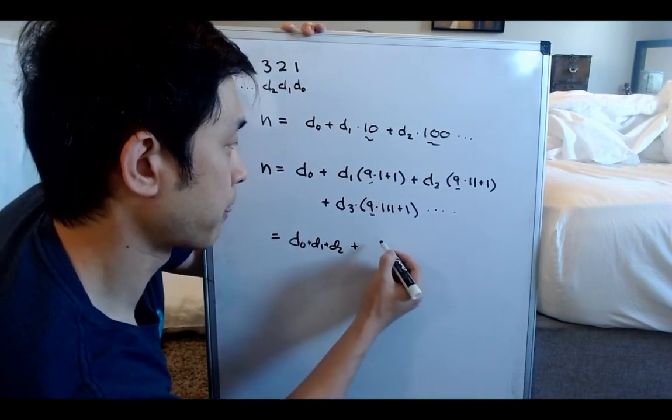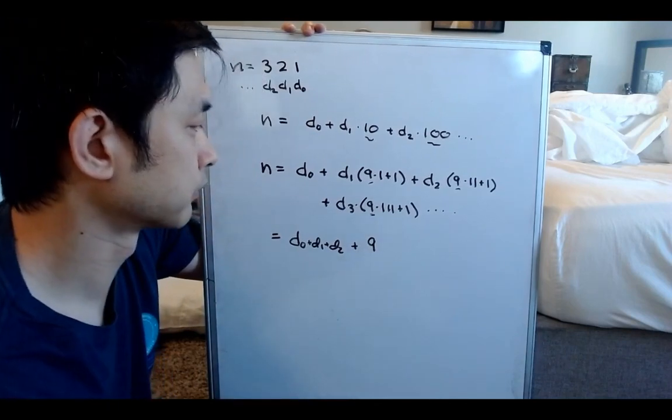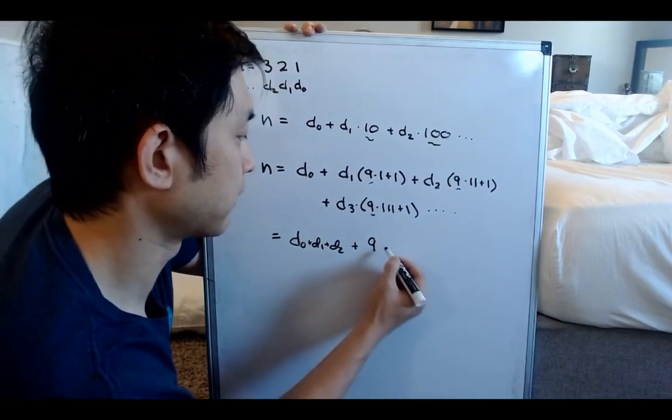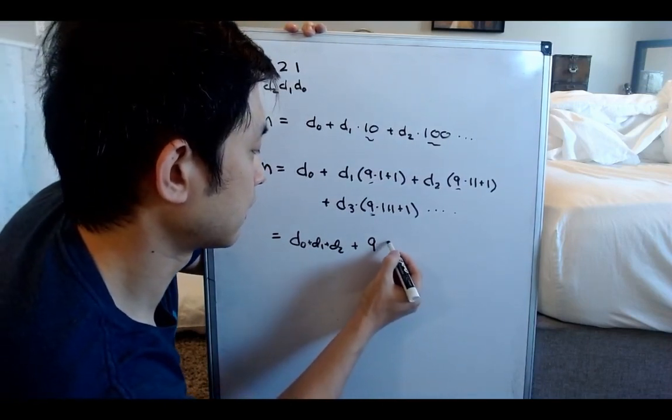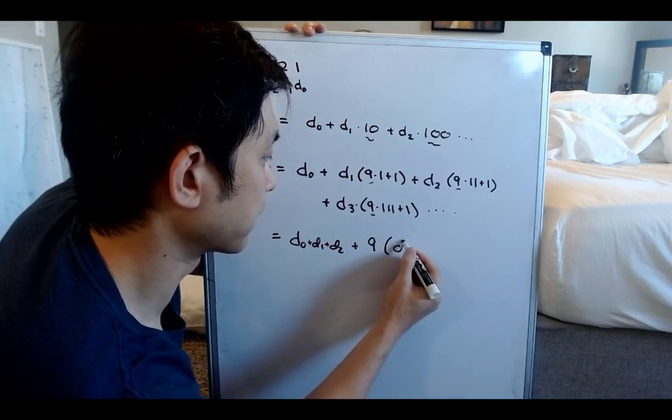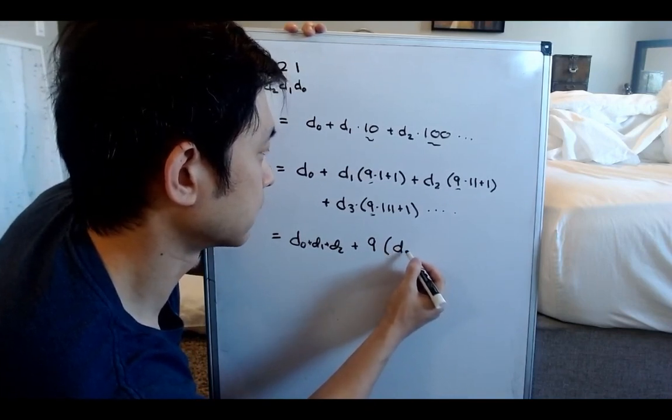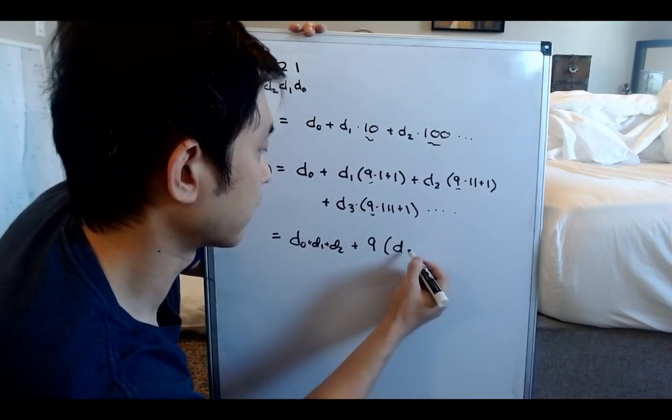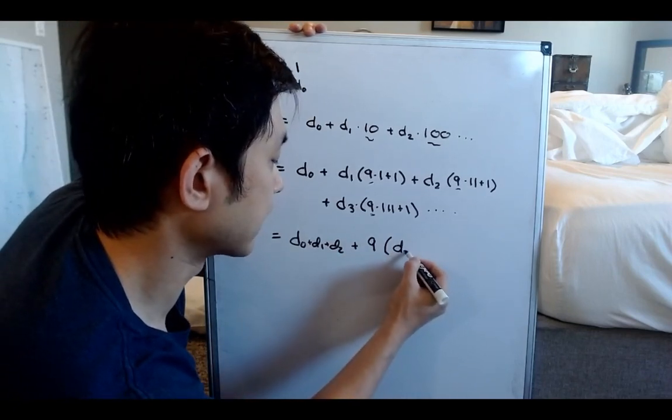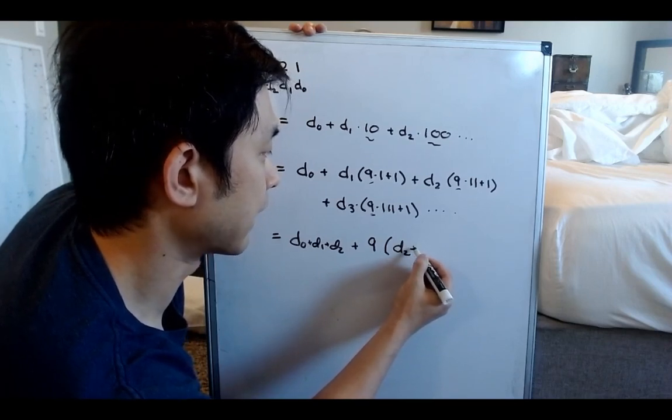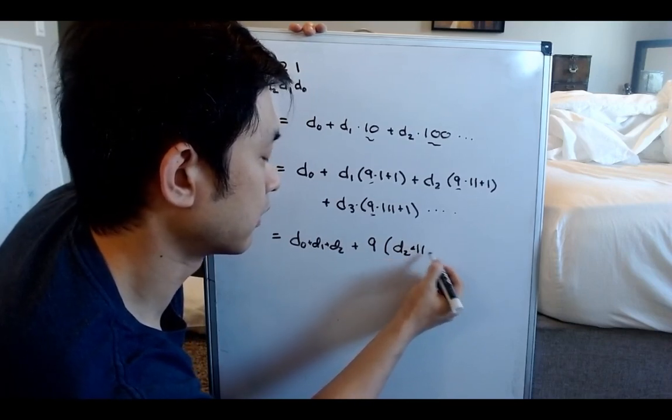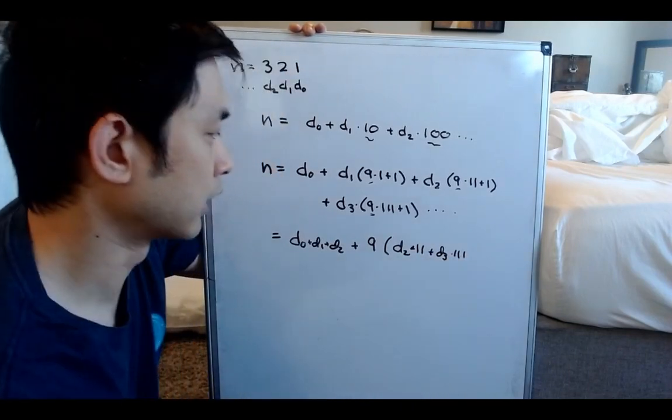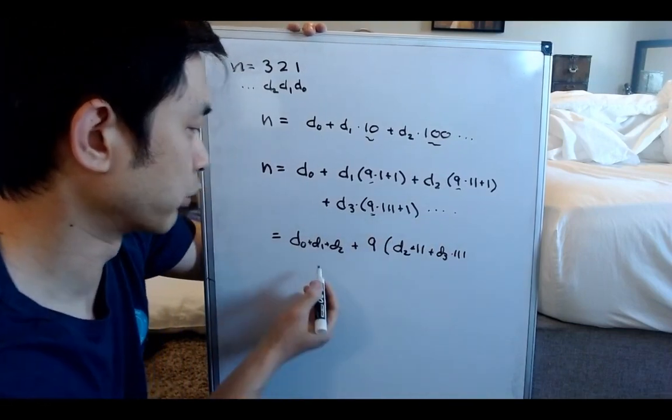plus 9, let's see, times D, let's say we start with like D1, it would be D, well, D1 would be nothing, but like D2, let's say, would be times 11 plus D3, 111, and so on and so forth, because this plus 1 we added, we took it out here.